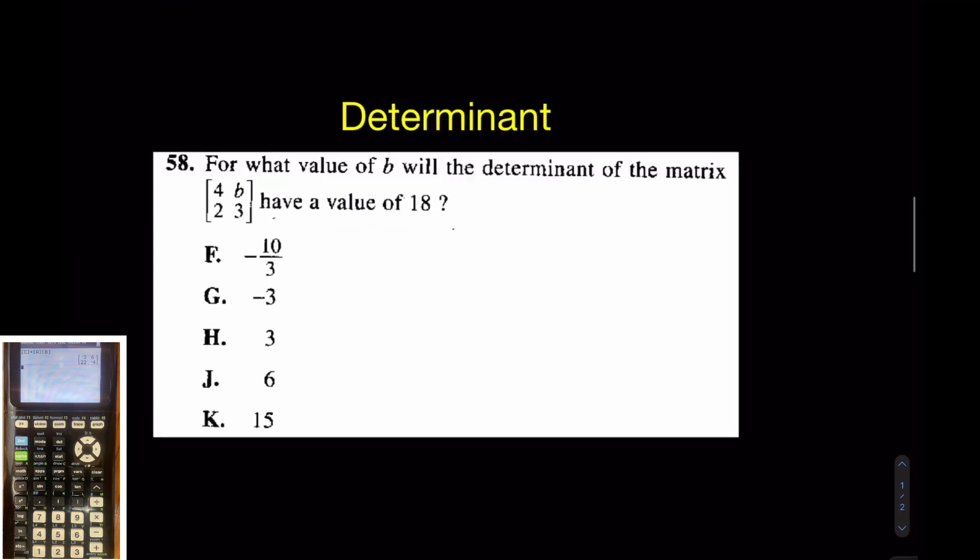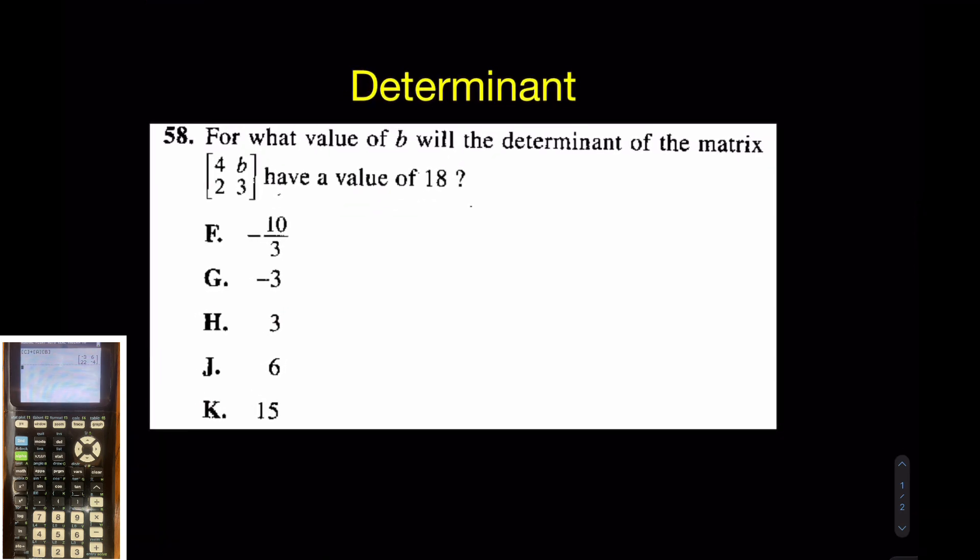Let's come down here for the last matrix skill, something that they have tested recently. It's called the determinant. And in case you forget the formula, the formula is AD minus BC. Sometimes they give you this. I call this the criss minus cross skill. Why? Well, it's just criss minus cross. In this case, it would just be 4 times 3 minus 2 times B.